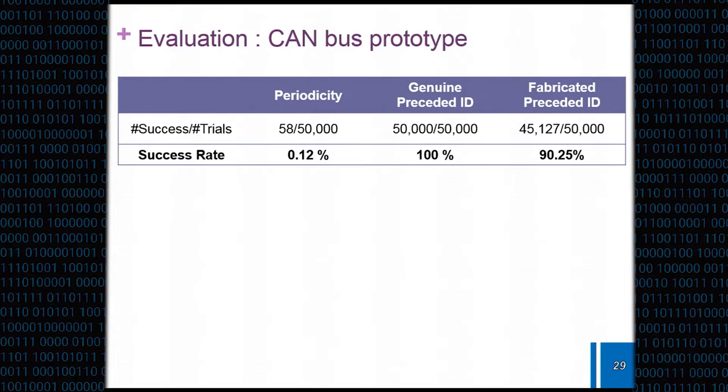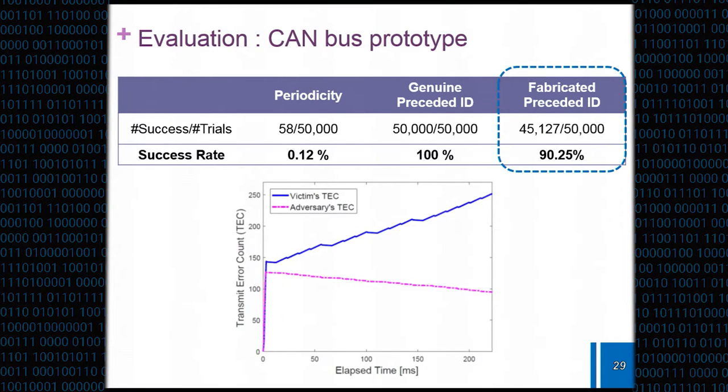We also examined which approach is the most efficient one. Just looking at periodicity, it didn't really work. The accuracy was very low. But if we assumed the genuine preceded ID, the accuracy was 100% in achieving this bus off attack. Even when we fabricated that the accuracy was 90% and eventually made the victim bus off as well.